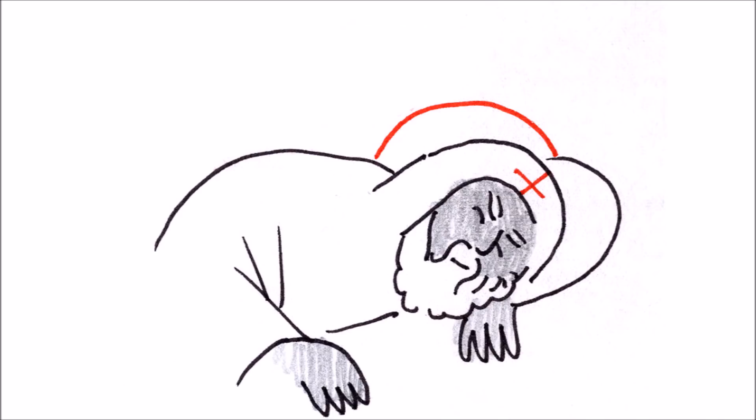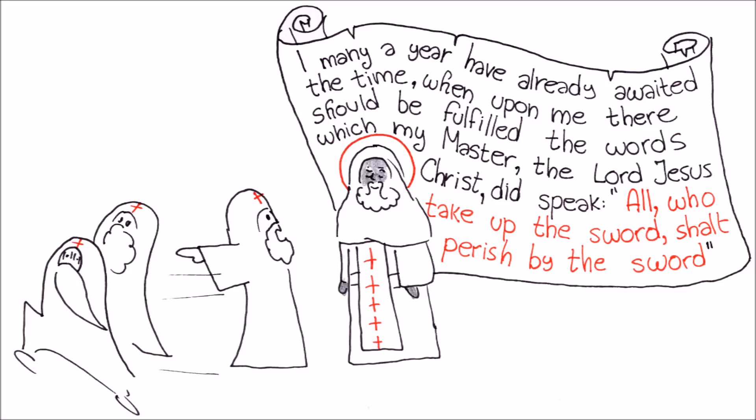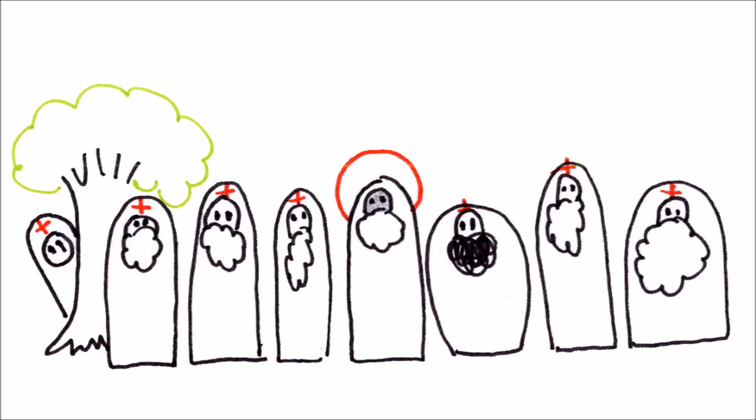When he was 75, St. Moses had a vision that the monastery will be overrun by robbers. He warned the others, but decided to remain within the monastery himself, saying that such a death is only fitting for a former robber. Seven monks remained with the saint, and all but one were killed, the last monk hiding himself and witnessing the death of St. Moses and his disciples.